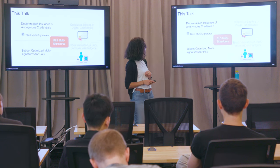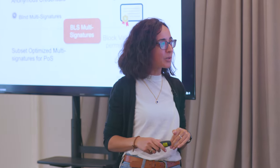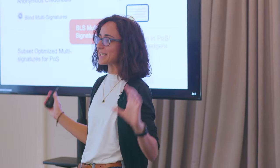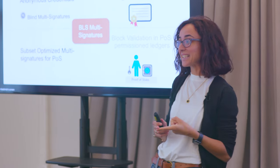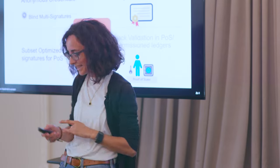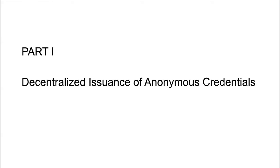In today's talk, I will focus on two applications of multisignatures and discuss two results. The first will be decentralized issuance of a special type of digital certificates — anonymous credentials. To do that, I will introduce a new building block called blind multisignatures. In the second part, I will talk about a variation of multisignatures optimized for subsets of signers. Both works are based on the concrete case of BLS multisignatures, one of the most well-known and efficient multisignature schemes in the literature.